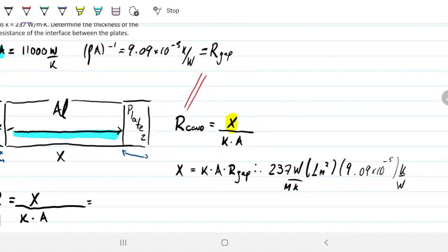So unit wise, we have watts and watts, we have Kelvin and Kelvin, and we have meters and meters squared, so we're going to be left with meters. And this turns out to be 0.0215 meters, which is the same thing as 2.15 centimeters.